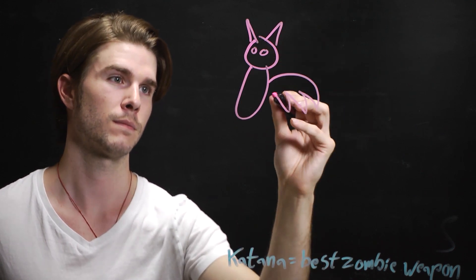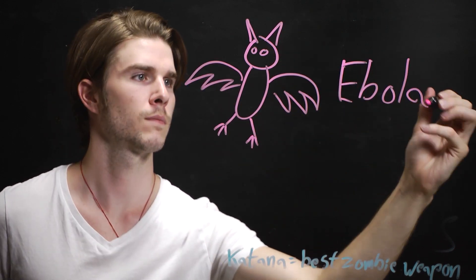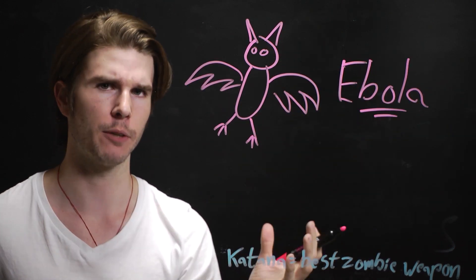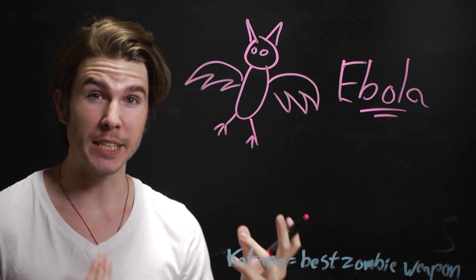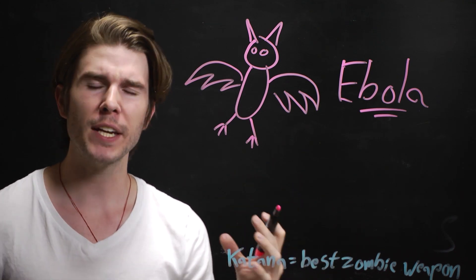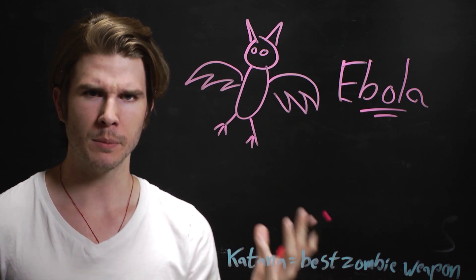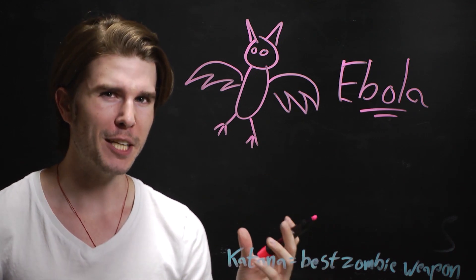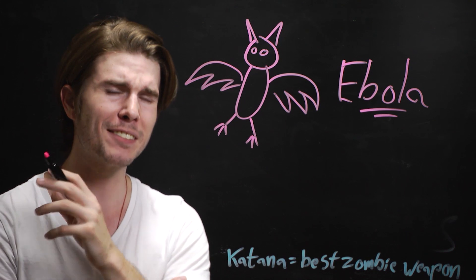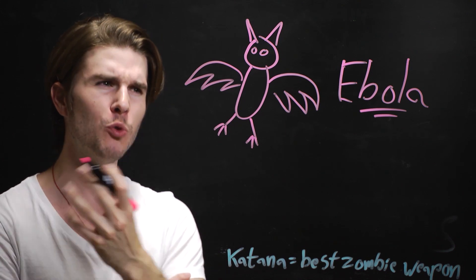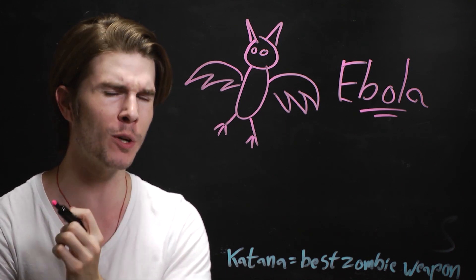For example, we think that bats are a reservoir for the deadly Ebola virus. That means that Ebola is definitely coursing through their veins, but they don't die from it. Similarly, it would be odd if getting bit by a zombie that has the zombie virus would kill you with that virus if everyone already had it.